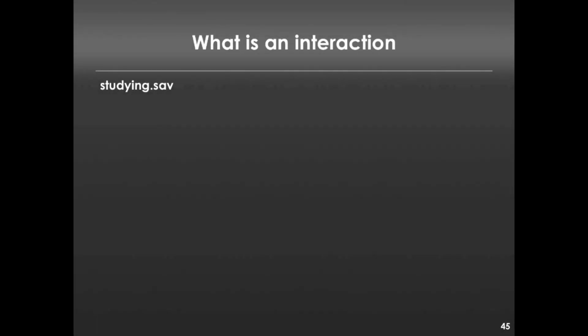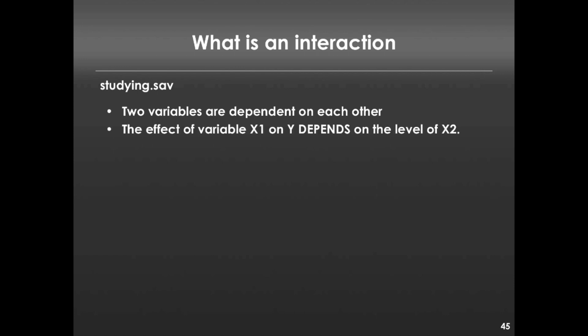In order to do this, we'll be using the studying.sav dataset, which is a made-up dataset that I use just for this example. The idea of an interaction is that two variables are dependent on one another in relation to their effect on an outcome variable. So the effect of a variable, say x1, on y, on an outcome variable, depends on the level of another variable x2. I want to go through an example here that hopefully will illuminate how this works.